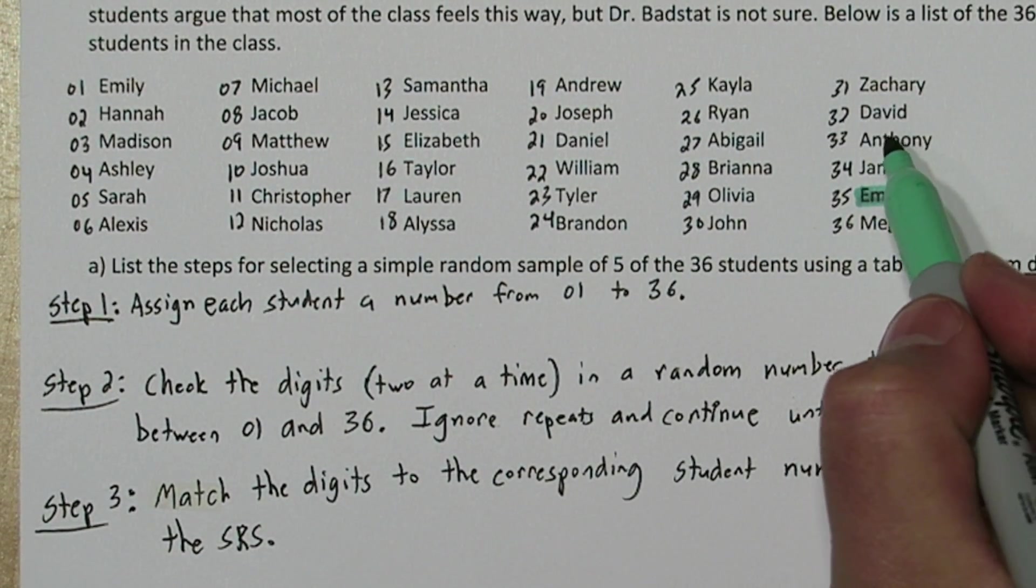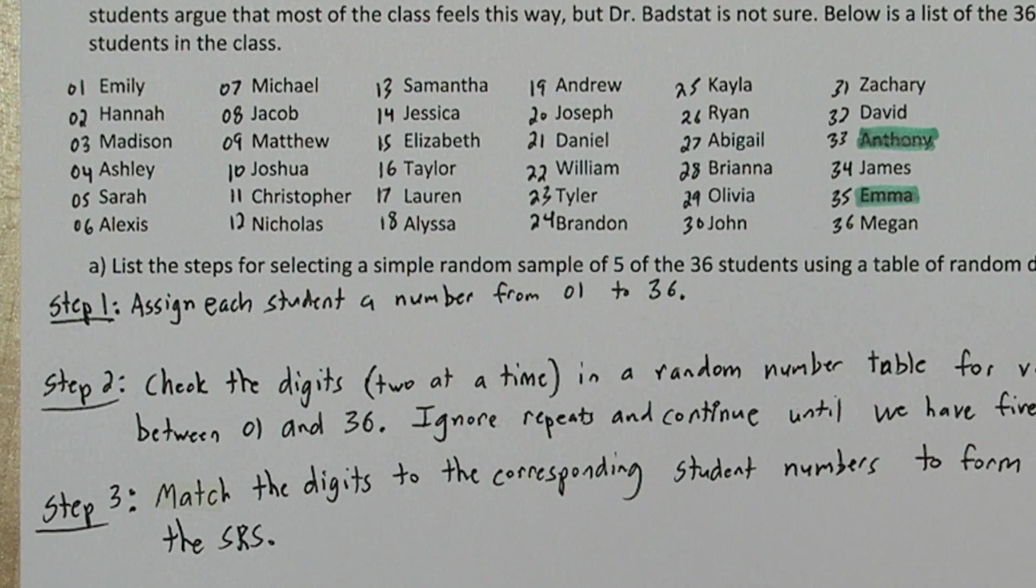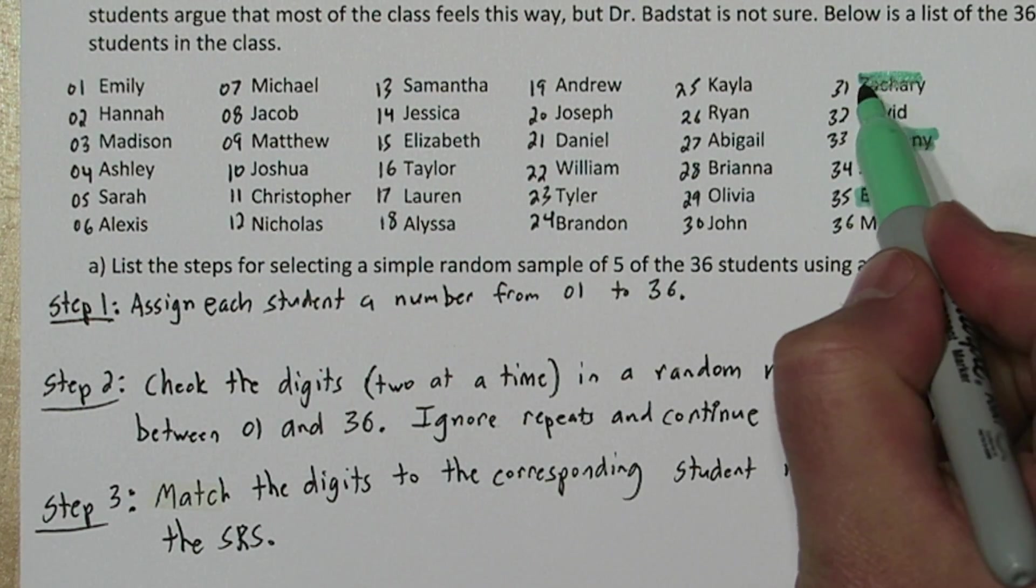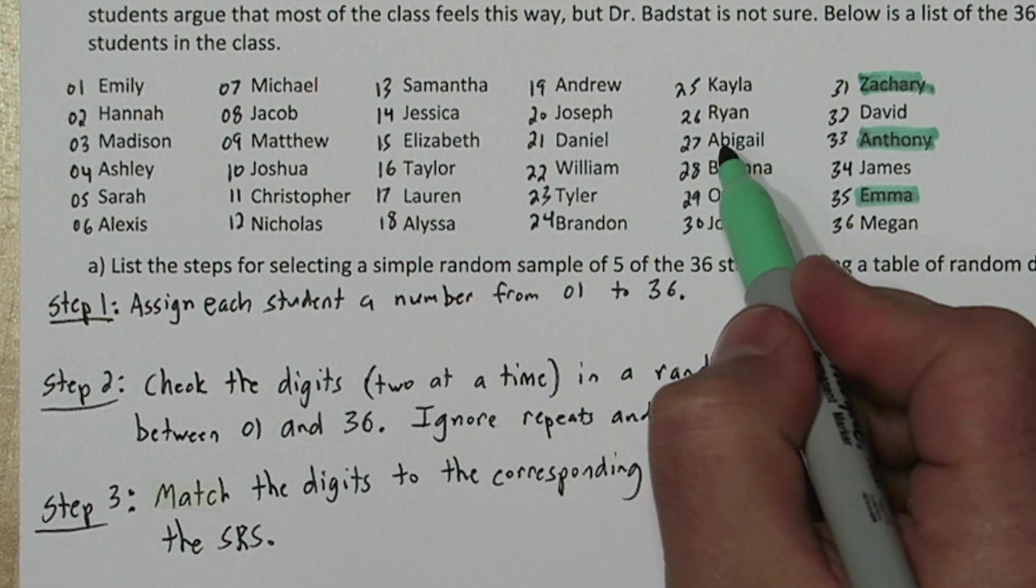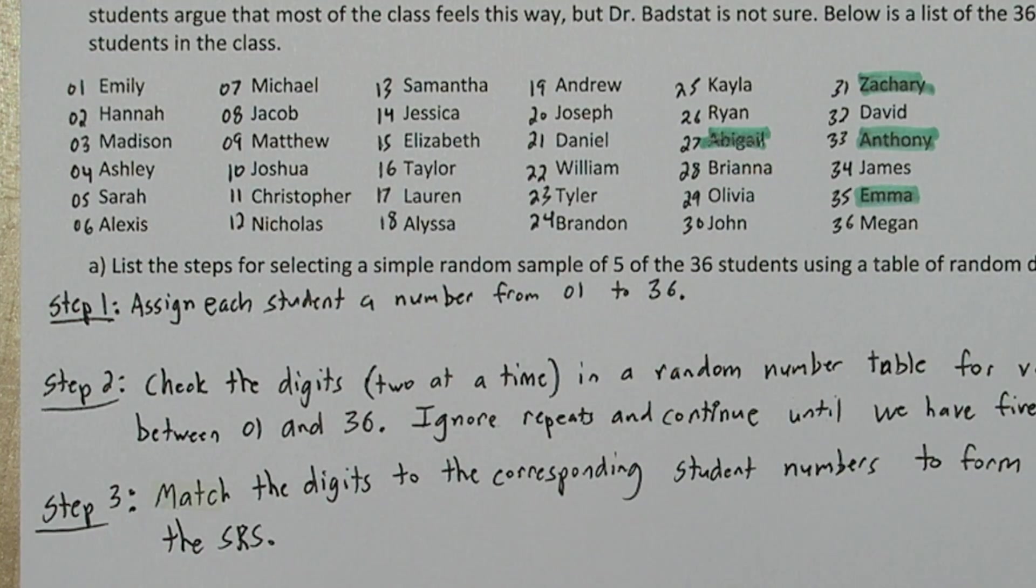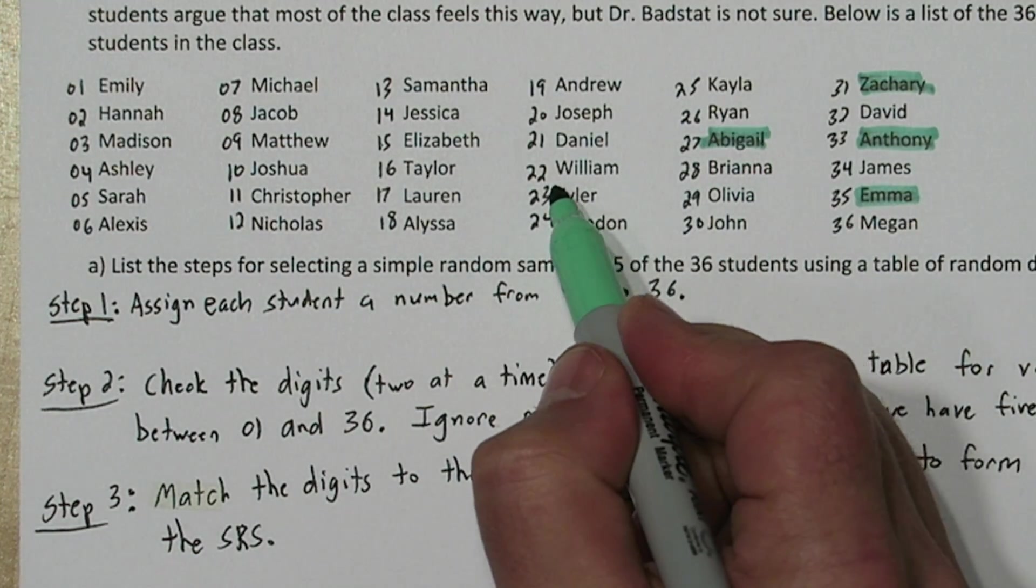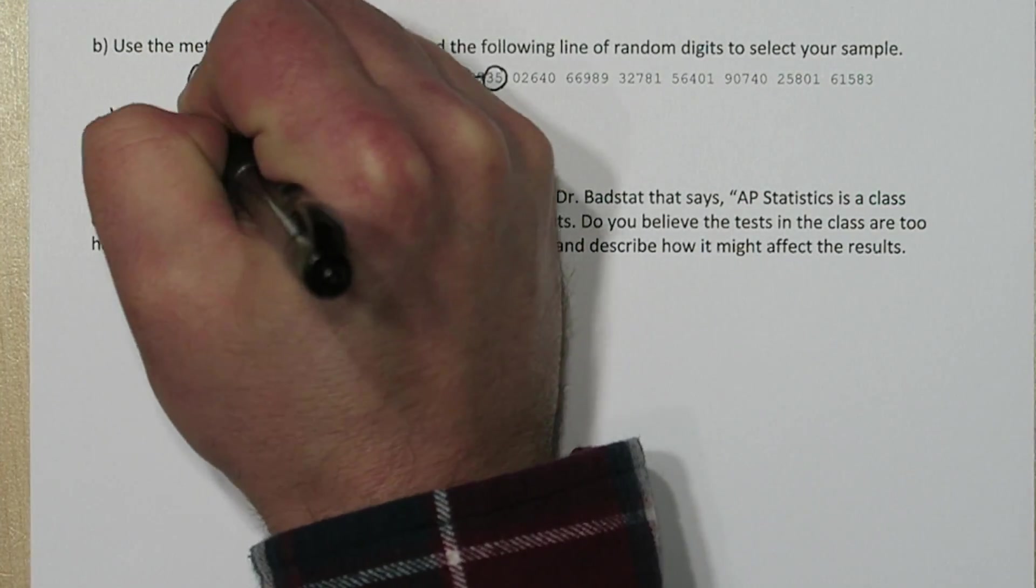Emma is 35. Anthony is 33. Zachary is 31. Abigail is 27. And Tyler is 23. So those are the students in our sample.